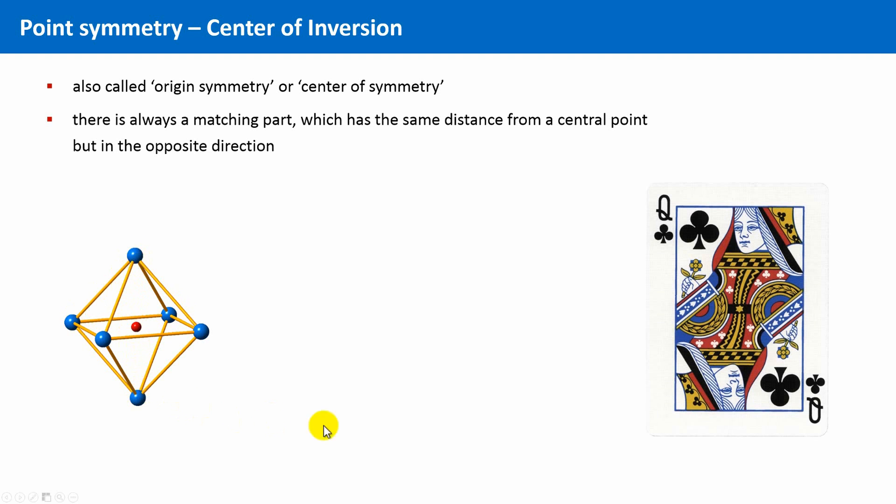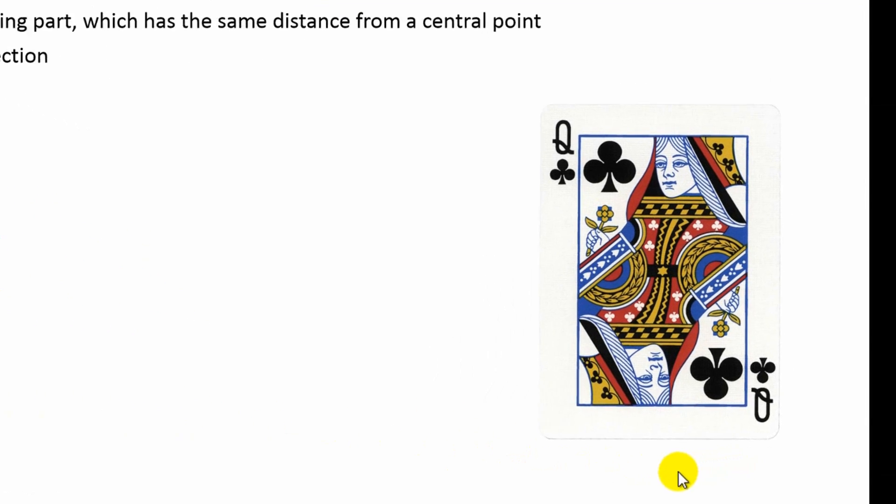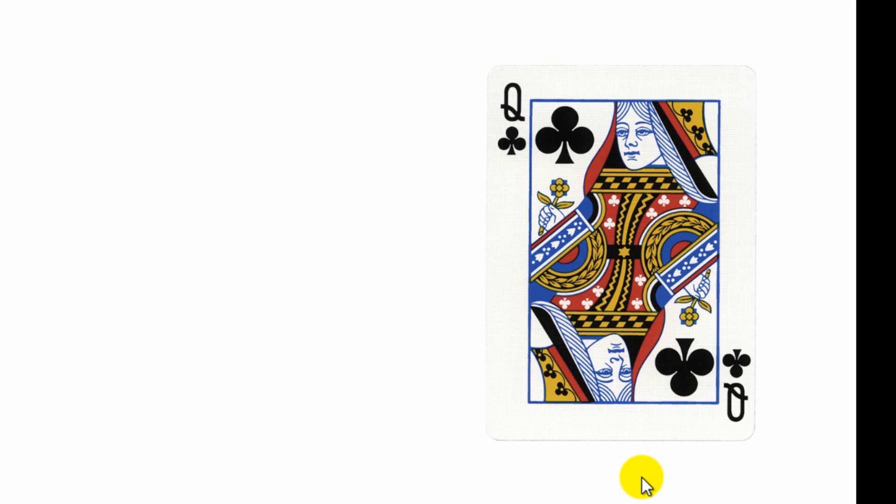For instance, look at this playing card, a queen. This queen has an inversion center. The face, these symbols—here clubs—and any other part of this card is present twice, and each pair of such identical points are related to each other by this center of inversion.